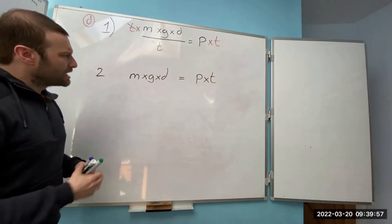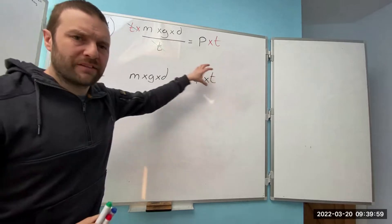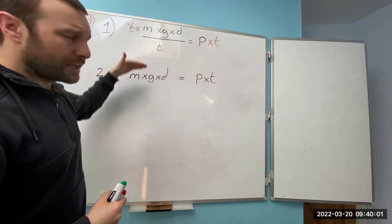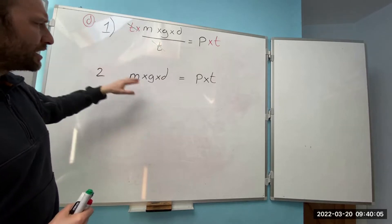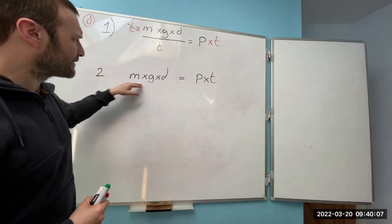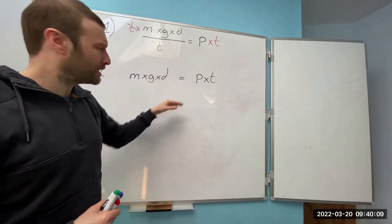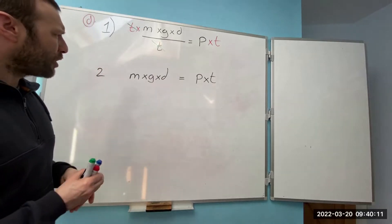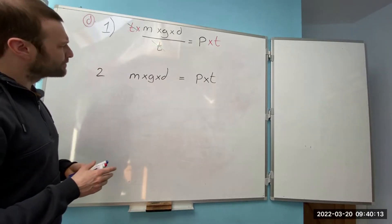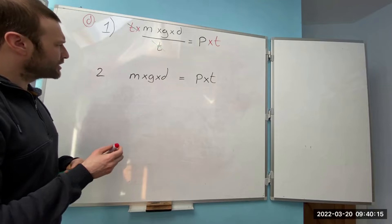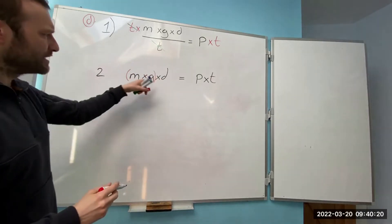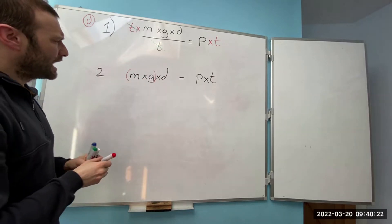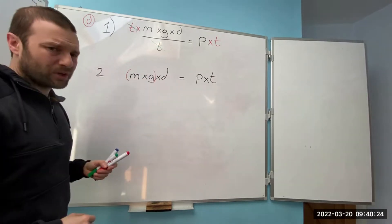Now that we've got everything on the same level we can then take out what we want to move. So we want to find d. I need everything this side of the d gone. At the moment I've got mass times gravity. What I could do is I could put that in brackets because they're times each other and I can move all of that in one go.